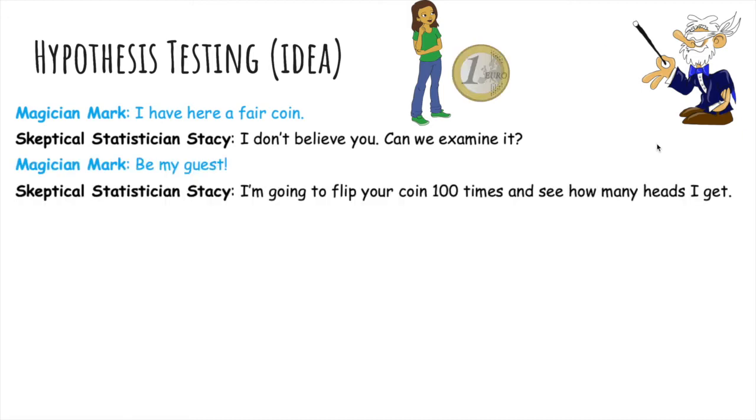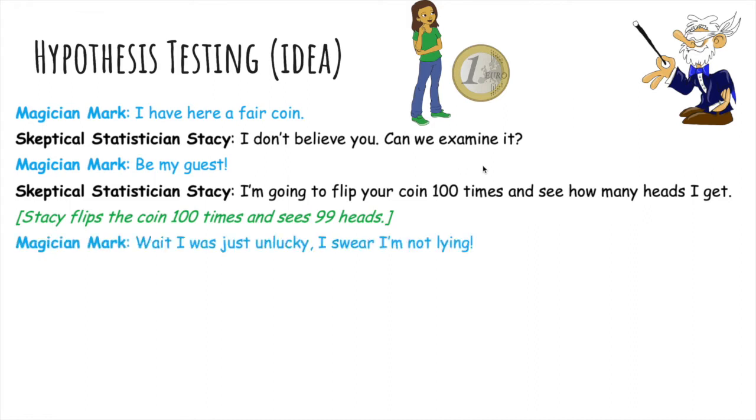And then he says, of course. So Stacy takes the coin, flips it 100 times, and says, I'm going to see how many heads I get. So she actually turns out to get 99 heads out of 100, which is ridiculous, right?